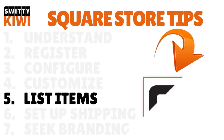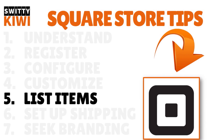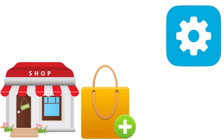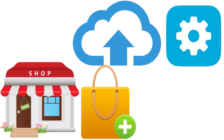Step five is to list items. After configuring your website design, it's time to add products to your store. You can add products individually — fine if you have 10 to 25 products — or upload products in bulk using an Excel or CSV file if you have many products, which will save you significant time. Square provides a step-by-step guide on their website to help with this process.